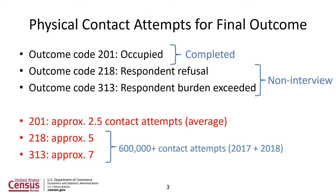We focus on three outcomes that are the most common in the ACS. Outcome Code 201, which is an occupied household and a completed survey, versus Outcome Code 218, which is a respondent refusal, and Code 313, which is a respondent burden exceeded — both of which lead to a non-interview. For Outcome Code 201, there are approximately two and a half contact attempts on average, whereas for a respondent refusal (218), approximately five, and for respondent burden exceeded (313), approximately seven contact attempts per household. This means there were over 600,000 contact attempts in 2017 or 2018 that did not end up in a response.